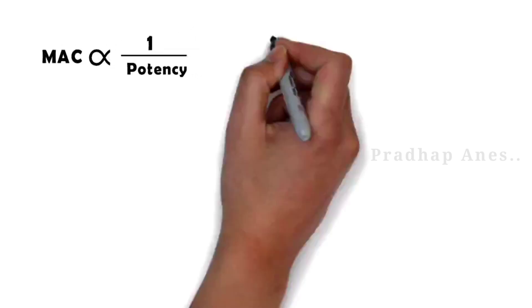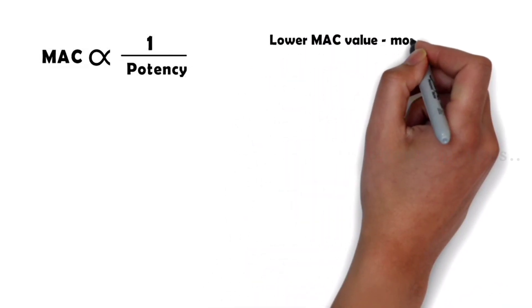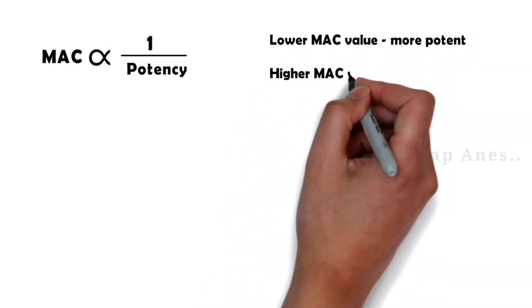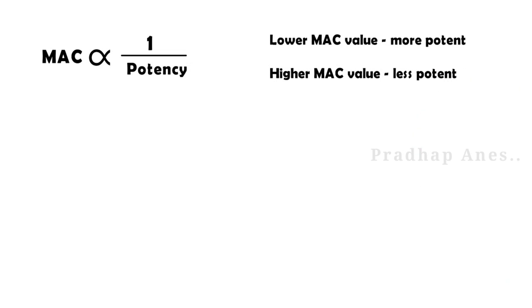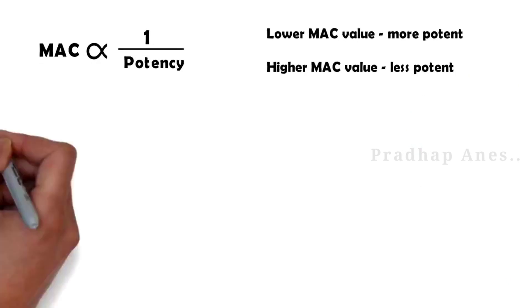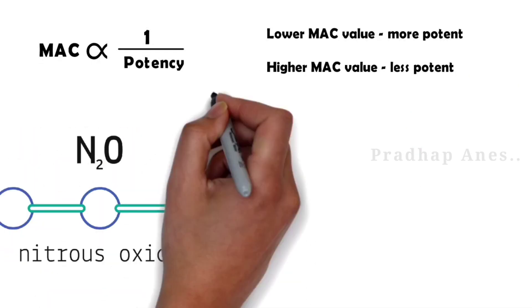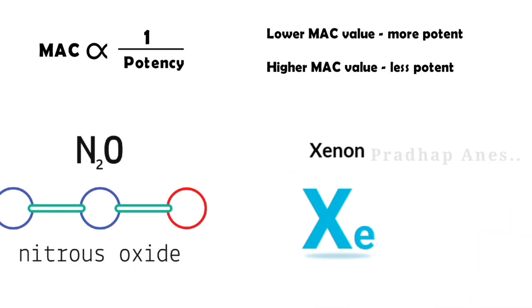A lower MAC value agent will be more potent; a higher MAC value agent will be less potent. For example, nitrous oxide has a MAC value of 105, so it is less potent, whereas xenon has a MAC value of 70, which makes it more potent.